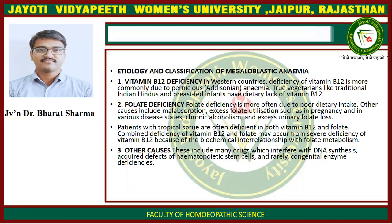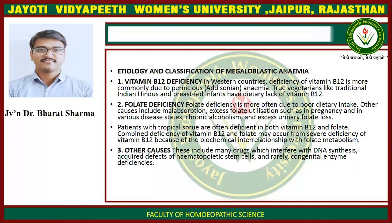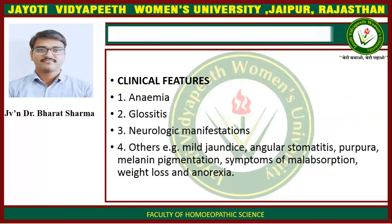Etiology and Classification of Megaloblastic Anemia: Vitamin B12 deficiency — in western countries, deficiency of vitamin B12 is more commonly due to pernicious anemia. True vegetarians like traditional Indian Hindus and breastfed infants have dietary lack of vitamin B12. Folate deficiency is more often due to poor dietary intake; other causes include malabsorption, excess folate utilization such as in pregnancy and various disease states, chronic alcoholism, and excess urinary folate loss. Patients with tropical sprue are often deficient in both vitamin B12 and folate. Combined deficiency of vitamin B12 and folate may occur from severe deficiency of vitamin B12 due to the biochemical interrelationship with folate metabolism. Other causes include many drugs which interfere with DNA synthesis, effects on hematopoietic stem cells, and rarely congenital enzyme deficiency.